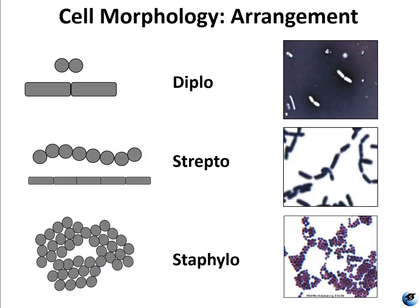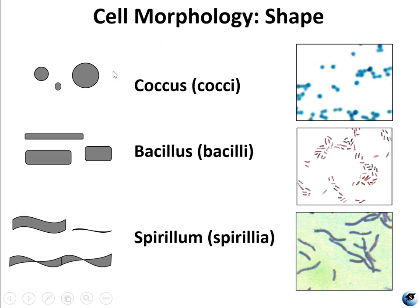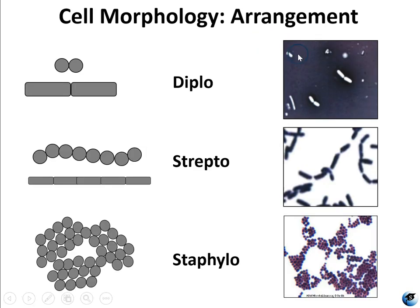For arrangement, there are several types, but these are the most common. If cells appear mostly by themselves, there isn't really a separate name for the arrangement — you would call the arrangement the same as the shape. So cocci appearing individually would just be called cocci for both shape and arrangement. If the majority are coming in pairs, that is diplo. You can have diplococcus, diplobacilli, and even diplospirilium.